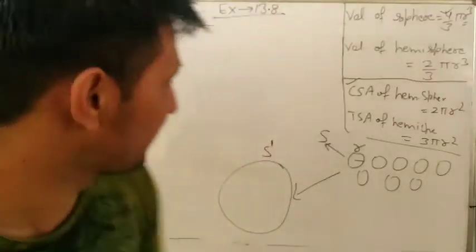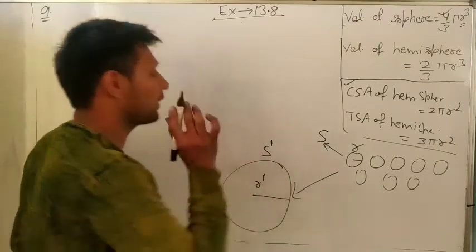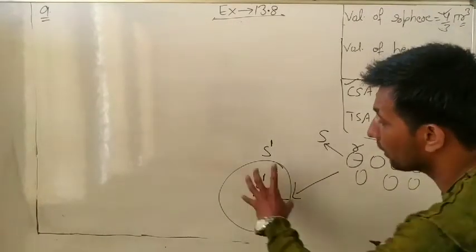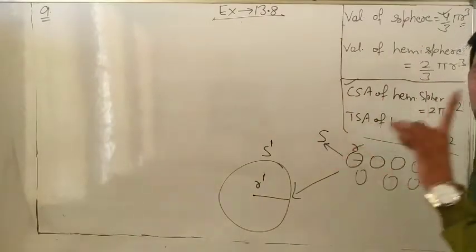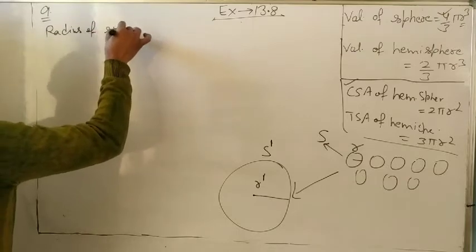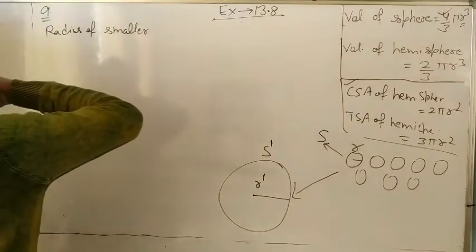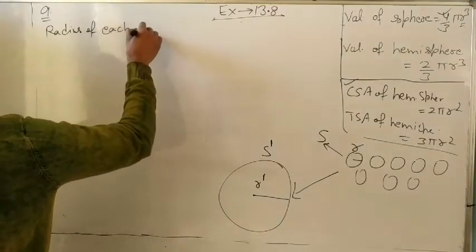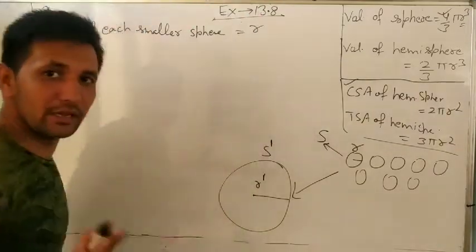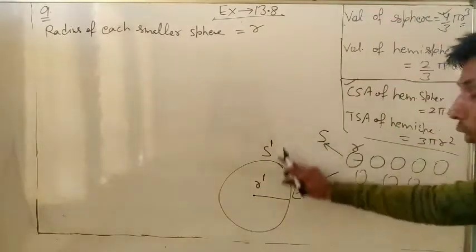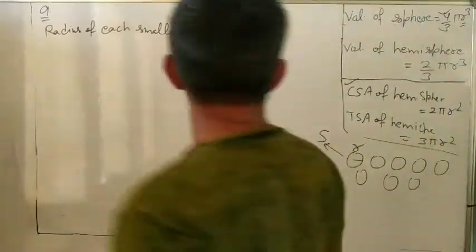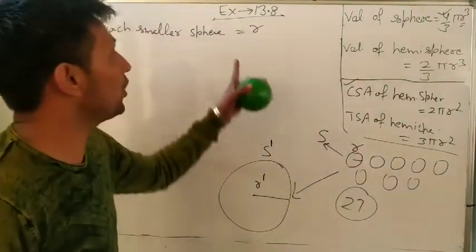When you melt all 27 spheres and make one big sphere, the volume of the bigger sphere equals the total volume of all 27 smaller spheres. The radius of each smaller sphere is r (given). Volume of one smaller sphere = (4/3)πr³, so volume of 27 smaller spheres = 27 × (4/3)πr³.